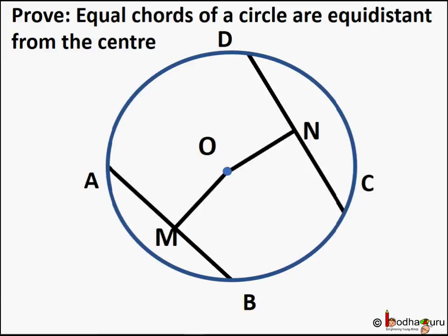Equal chords of a circle are equidistant from the center. By distance we mean perpendicular distance, which is the shortest distance. This means we need to draw perpendiculars on chords AB and CD from the center O to find the distance between the chords and the center, and we need to prove that OM is equal to ON.